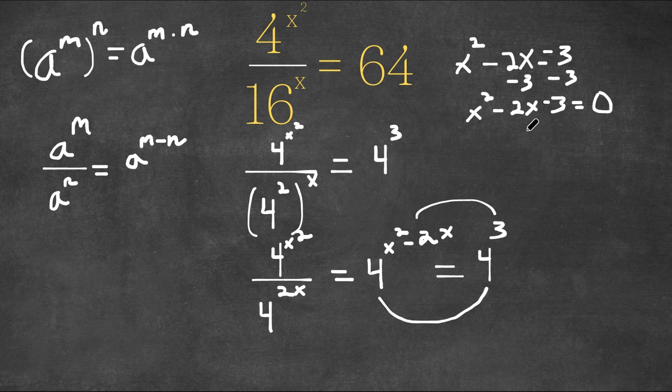So negative b, well, b is negative 2. So negative of negative 2 is positive 2 plus or minus the square root of b squared. So negative 2 squared, which is 4 minus 4, 4 times a is negative 2 times c is negative 3.